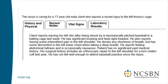The nurse is caring for a 17-year-old male client who reports a recent injury to the left thoracic cage. History and physical tab: client reports injuring his left ribs after being struck by a mechanically pitched baseball in a batting cage last week. He has significant bruising, feels lightheaded, reports intermittent pain in the left shoulder, denies shortness of breath, has discomfort in the left lower chest when taking a deep breath, reports abdominal fullness and occasional nausea. No significant past medical history. Surgical history includes arthroscopic repair to the left shoulder for a torn rotator cuff last year. Has not felt well enough to attend baseball practice since the injury.